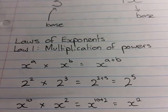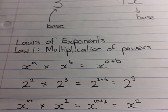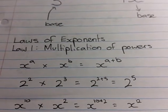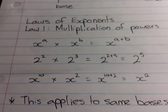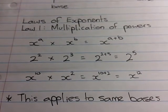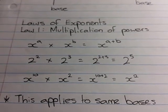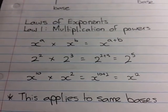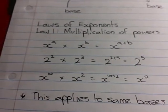Remember, these laws only occur with the exponents. There are some minor rules to be followed. For example, the first one, this applies to same bases. This will only happen between bases that are the same.